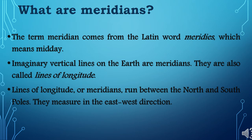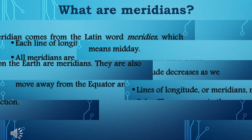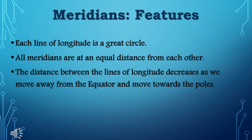Lines of longitude or meridians run between the north and south poles. They measure in the east-west direction. Meridians features: Each line of longitude is a great circle. All meridians are at an equal distance from each other. The distance between the lines of longitude decreases as we move away from the equator and move towards the poles.